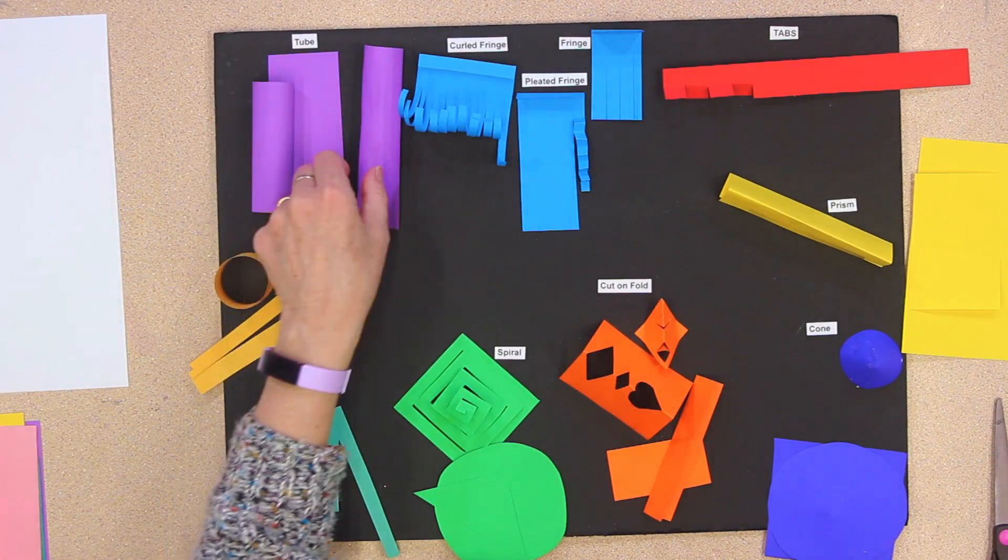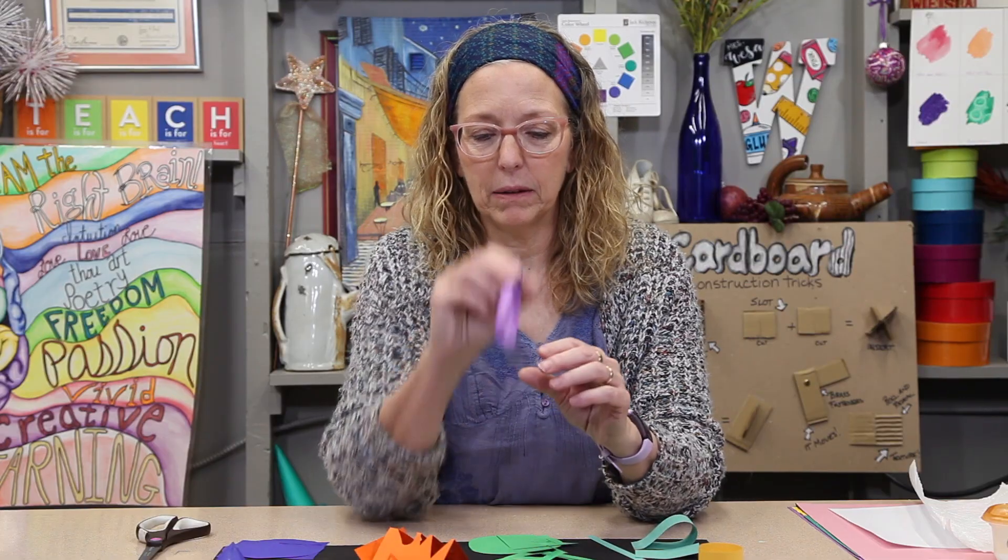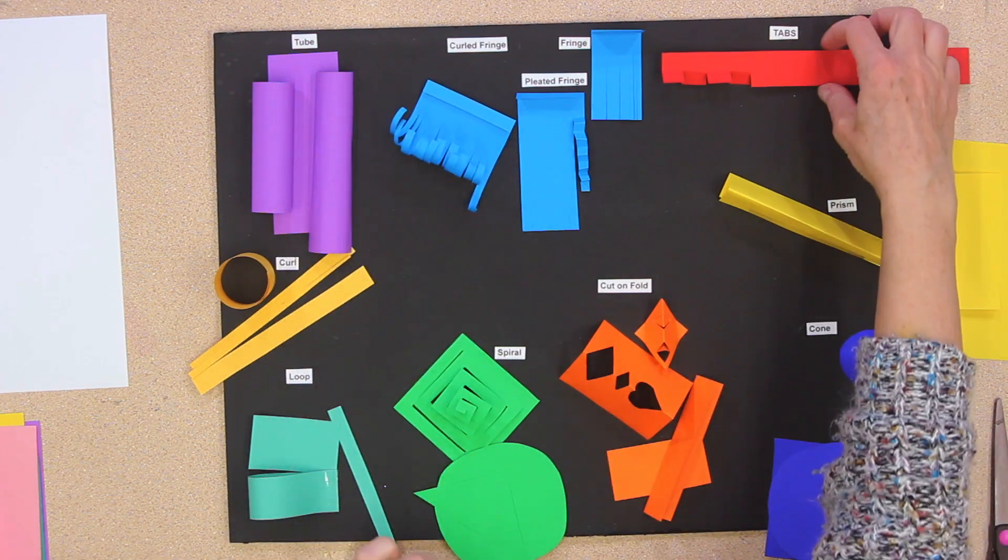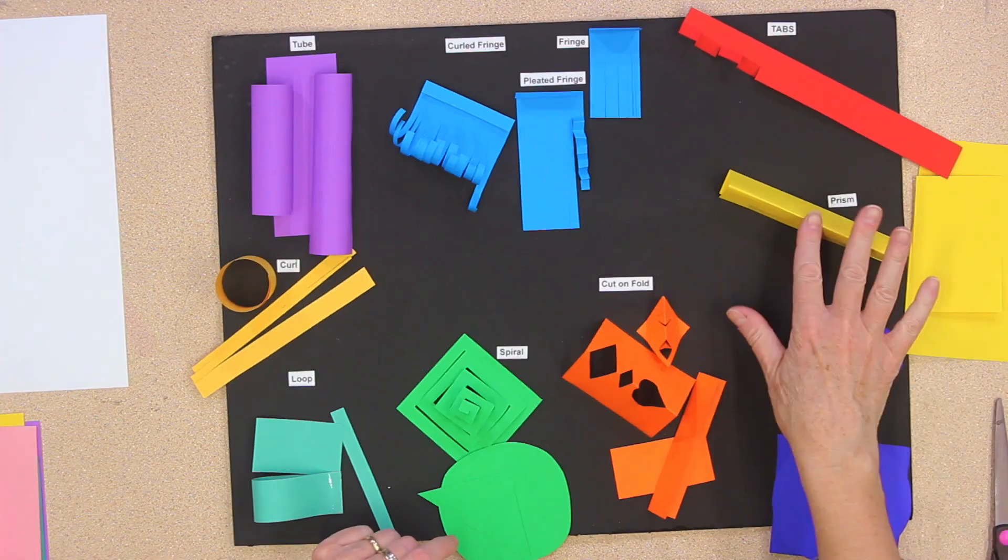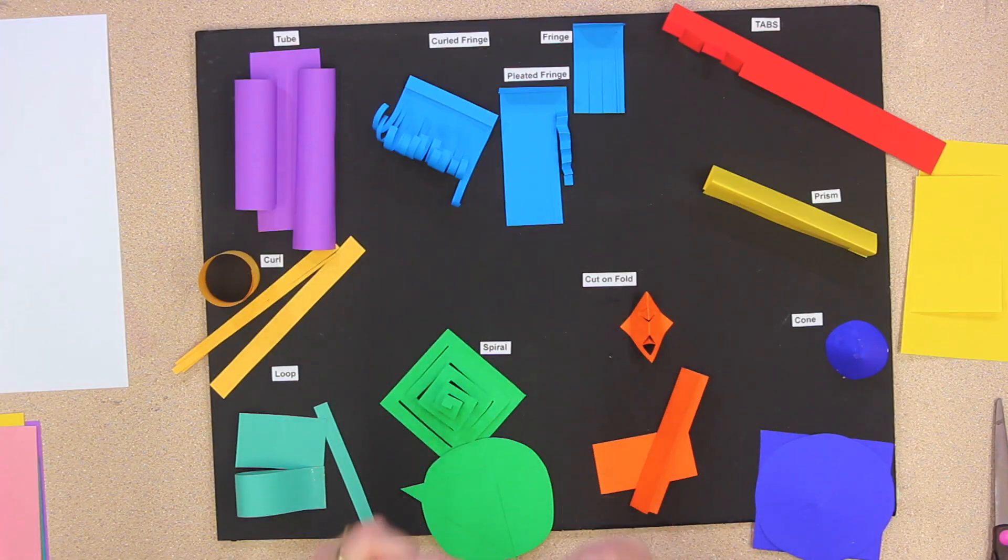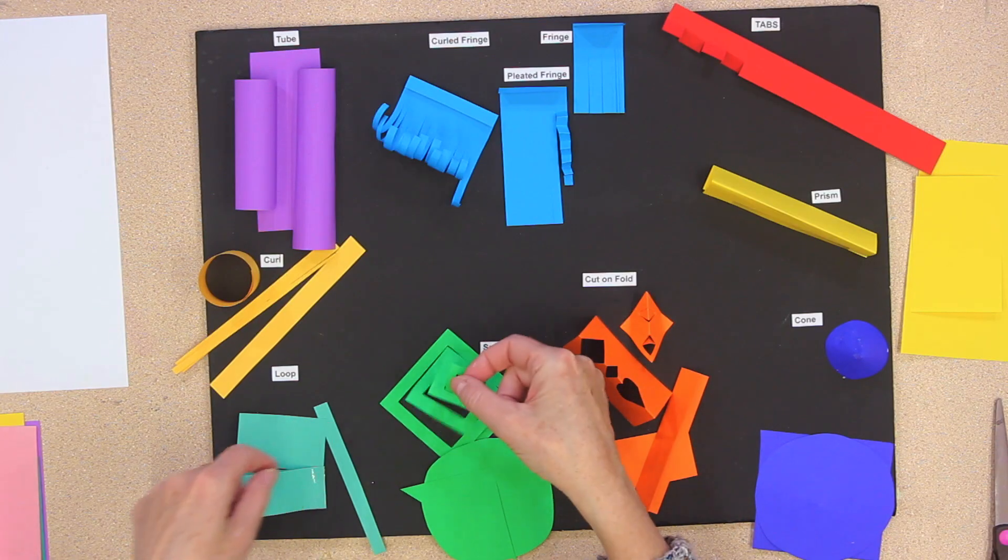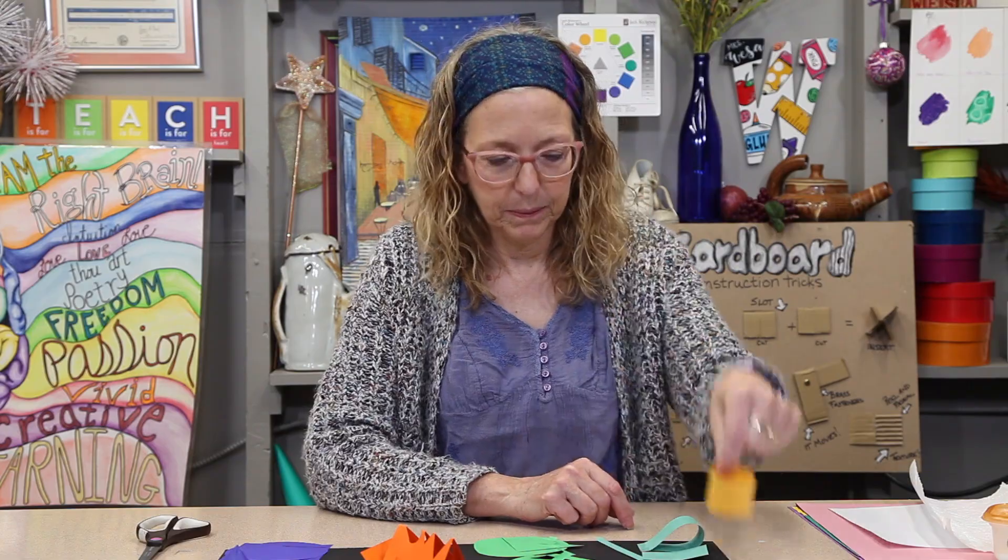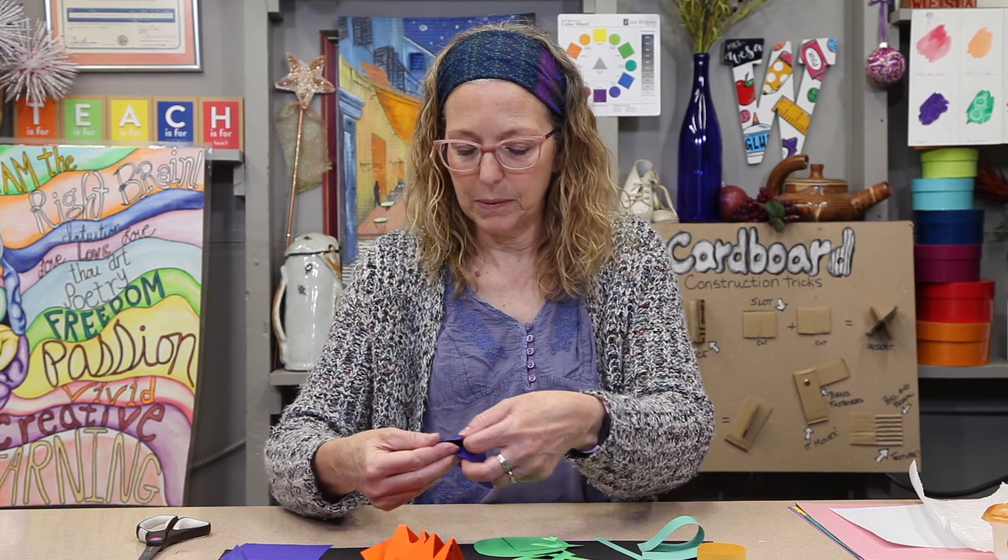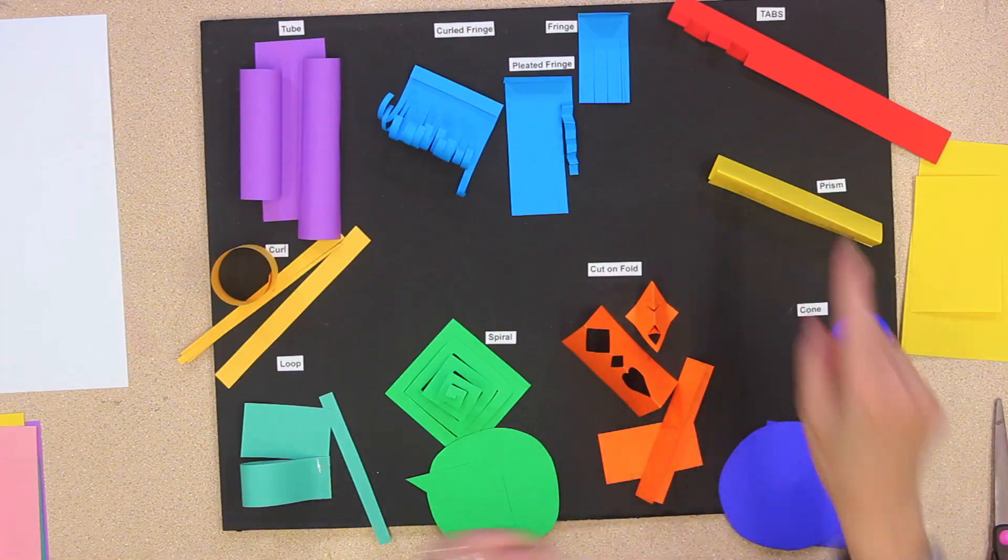We're going to start by introducing you to all the different techniques that I have here for you today. The first one is a tube. We're going to make some tubes. Fringe, different kinds of fringe, tabs, a prism, cut on fold, spiral, a loop, curl, cone. That's the prism. So let's get started.